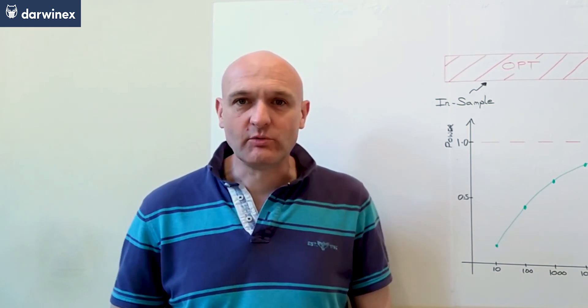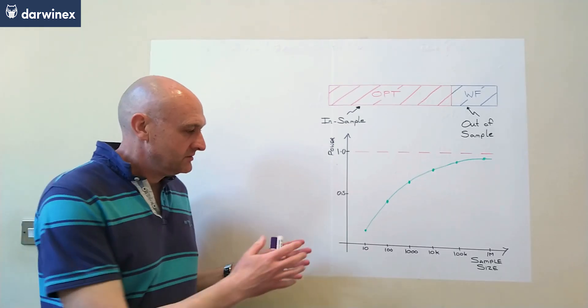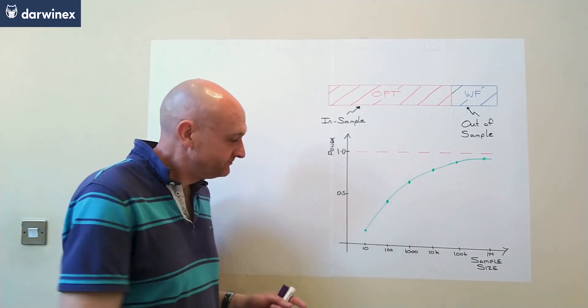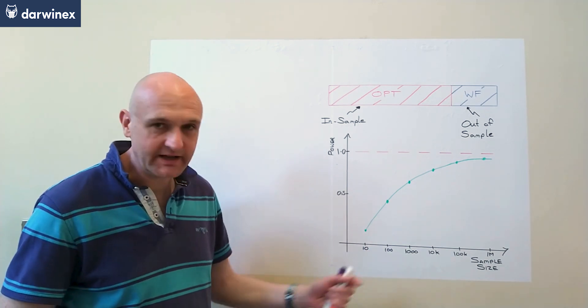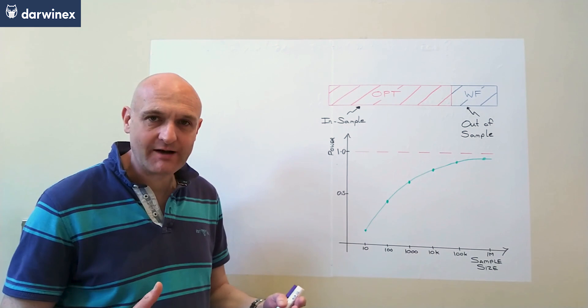So let's take a look at what a typical power analysis chart looks like. Along the x-axis, we've got the sample size, and you'll notice I've used a logarithmic scale there. And on the y-axis, we have the power,